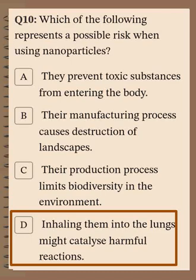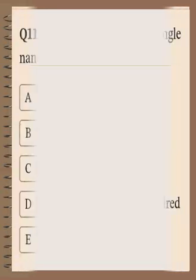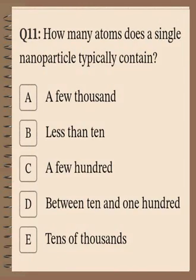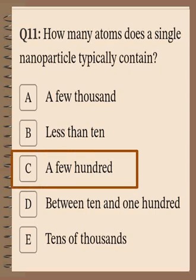Question number 11: How many atoms does a single nanoparticle typically contain? The options are a few thousand, less than 10, a few hundred, between 10 and 100, or tens of thousands. A single nanoparticle means a few hundred atoms — meaning from 1 to 100 — because any substance in the nanoscale must contain atoms less than 100.